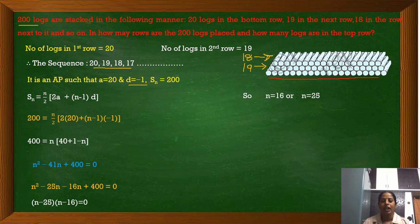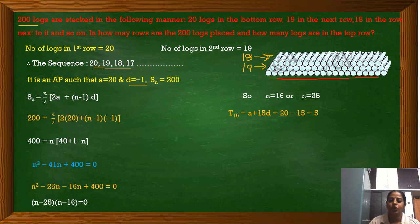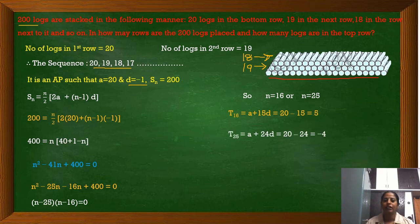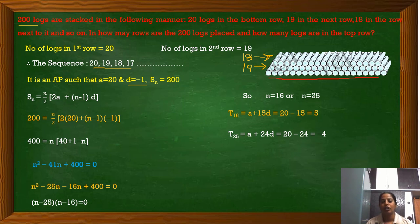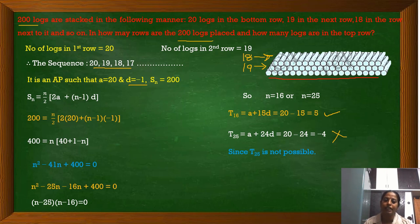There are two answers, so we check which one is correct. If n equals 16, the last term is t_16 equals a plus 15d equals 20 minus 15 equals 5. So in the last row we get 5 logs — this is valid. Now checking n equals 25: t_25 equals a plus 24d equals 20 minus 24 equals minus 4. We are getting minus 4 logs in the last row, which is not possible. Hence n equals 16 is the correct answer: 200 logs are placed in 16 rows.